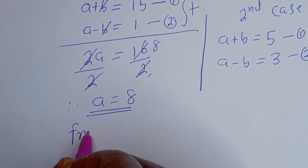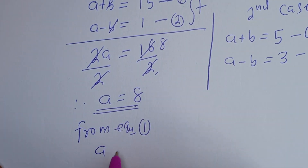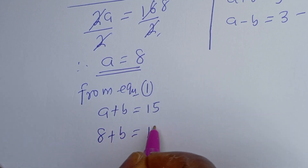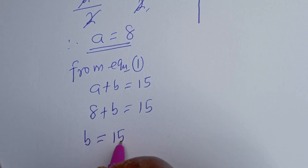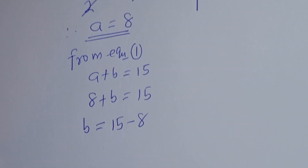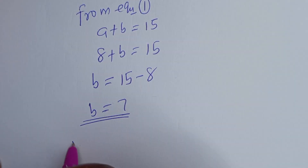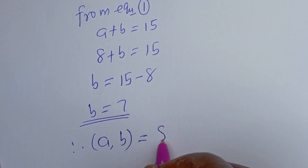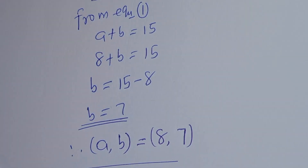From equation 1, a + b = 15. When a = 8, we have 8 + b = 15, then b = 15 - 8, so b = 7. This is the value of b. Therefore, (a, b) = (8, 7).